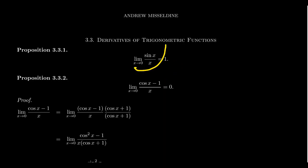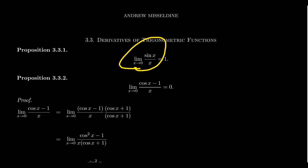It turns out that these two indeterminate forms will be very important as we try to calculate derivatives of trigonometric functions, as these difference quotients will, in fact, show up there. I do want to mention that these are difference quotients — the type of things you see in derivatives.